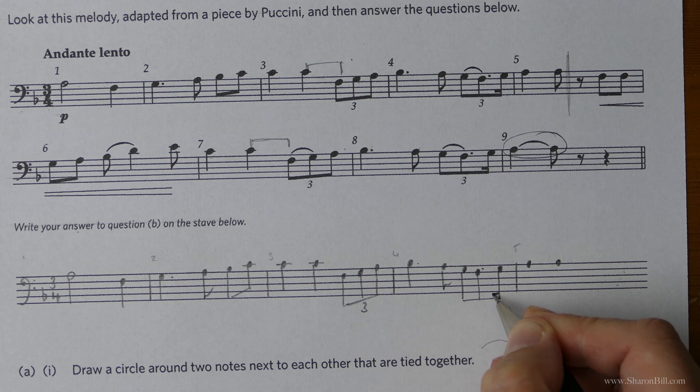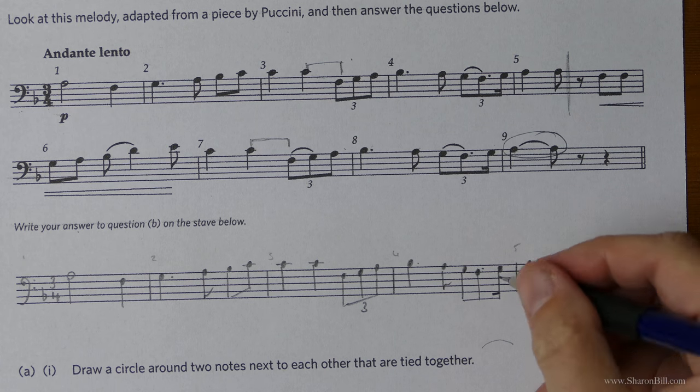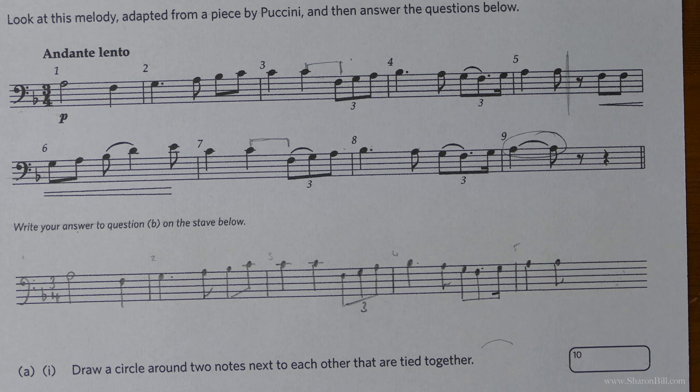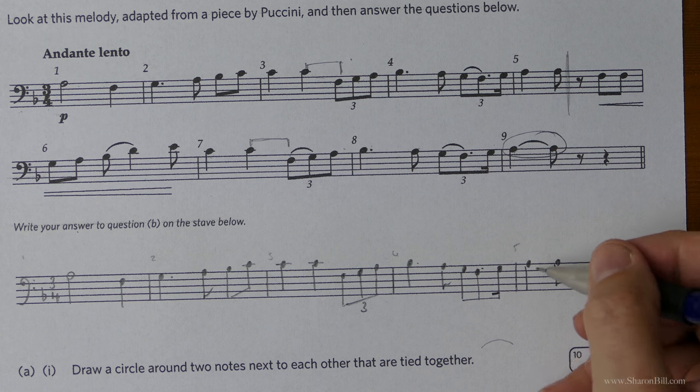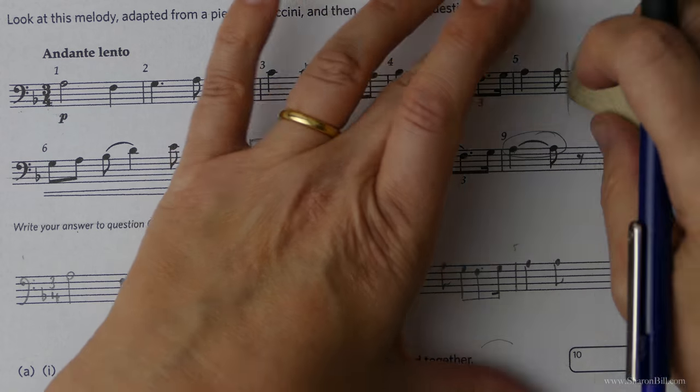By all means use a ruler if you feel you need to. The most important thing is don't be sketchy about it. We don't want lots of sketchy lines. Just one line. Job done. That needs a little stem. And then we've got a crotchet and a quaver. And we're going to the second note of bar five.